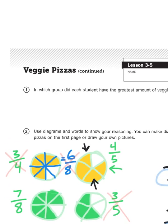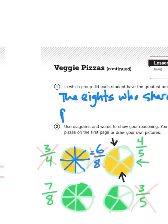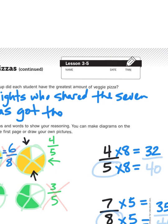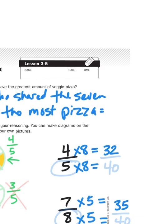So, to solve the problem, I write in this space the eight students who shared the seven pizzas got the most pizza, which was 7 8ths.